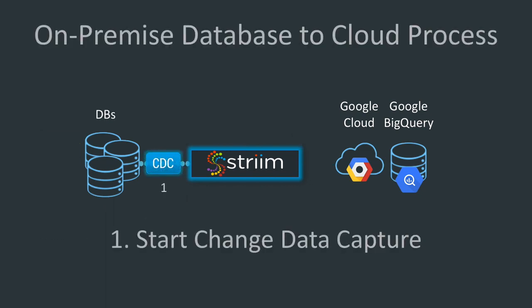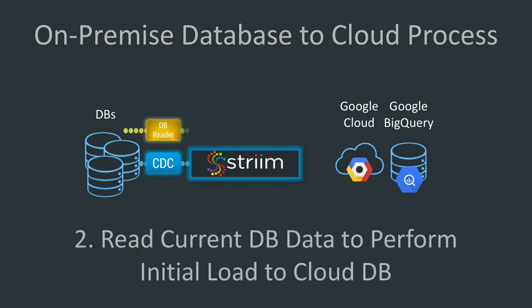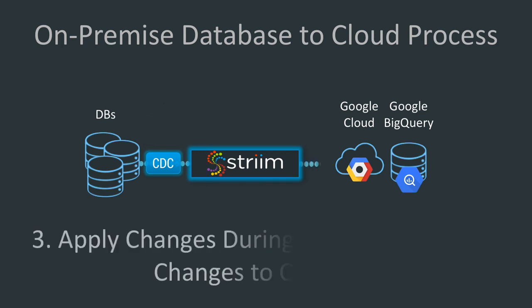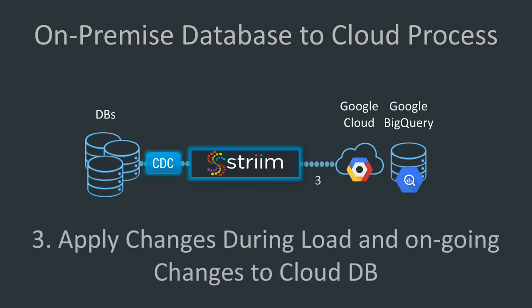The whole process of on-premise to cloud involves the following steps. First, you start Change Data Capture. Second, you do a full table load into Google BigQuery, and finally you turn on application of changes to perform updates that happened during the load and ensure ongoing changes are made in real time.